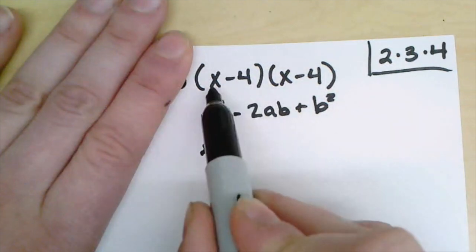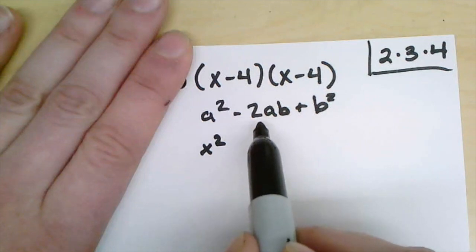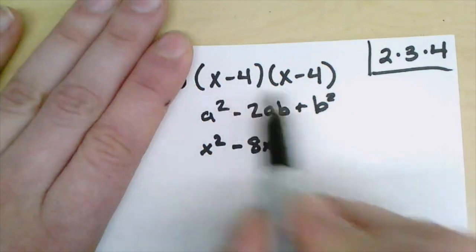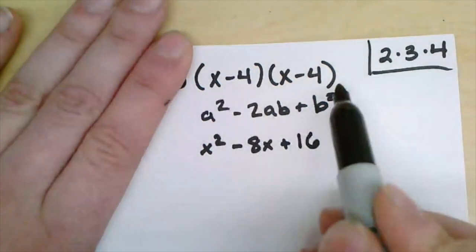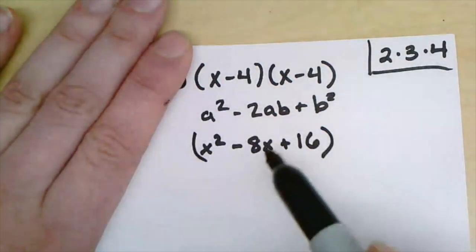The a times the b is 4 times x which is 4x, and I need to double that, so 8x, so I have a minus 8x. And then my b term was 4, if I square that I should have a plus 16. So I can use that pattern to get this portion of my binomial multiplied.